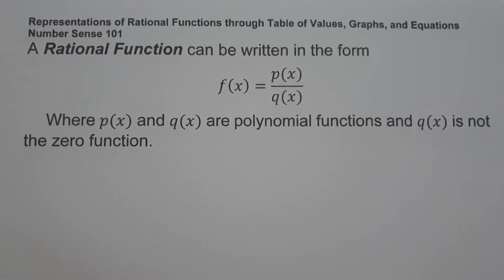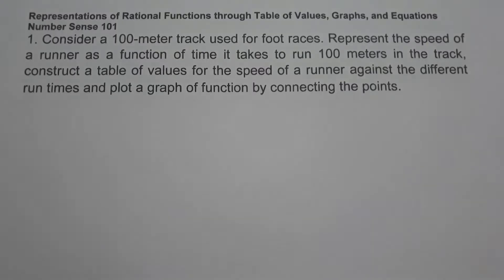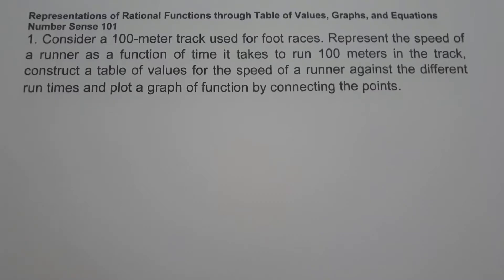So let's have an example. On the first example, consider a 100-meter track used for foot races. Represent the speed of a runner as a function of the time it takes to run 100 meters on a track. Construct a table of values for the speed of a runner against different run times and plot the graph of the function by connecting the points. The first thing we are going to do is represent the speed of a runner as a function of time, using the triangular formula for distance, speed, and time.